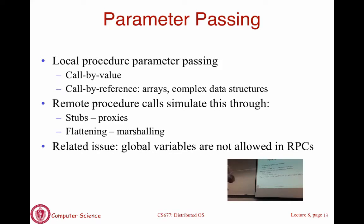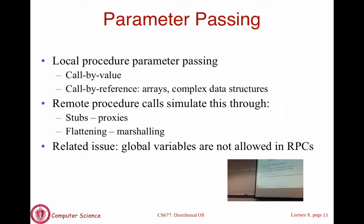Another related issue is global variables — you should avoid them in RPC systems because a global variable in the client process is not accessible to the server process. So you can't write code that accesses globals and expects them to mean anything across process boundaries. These are important pitfalls to avoid when programming with RPCs.